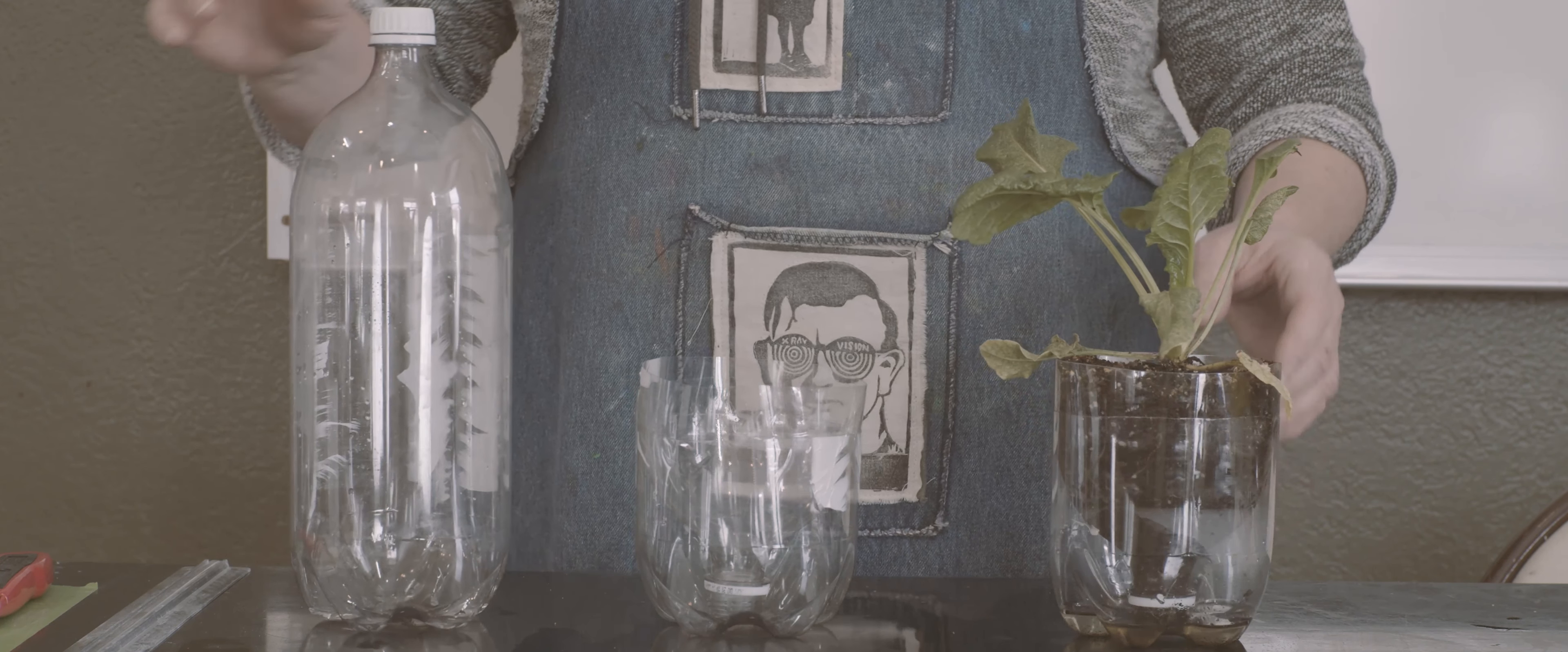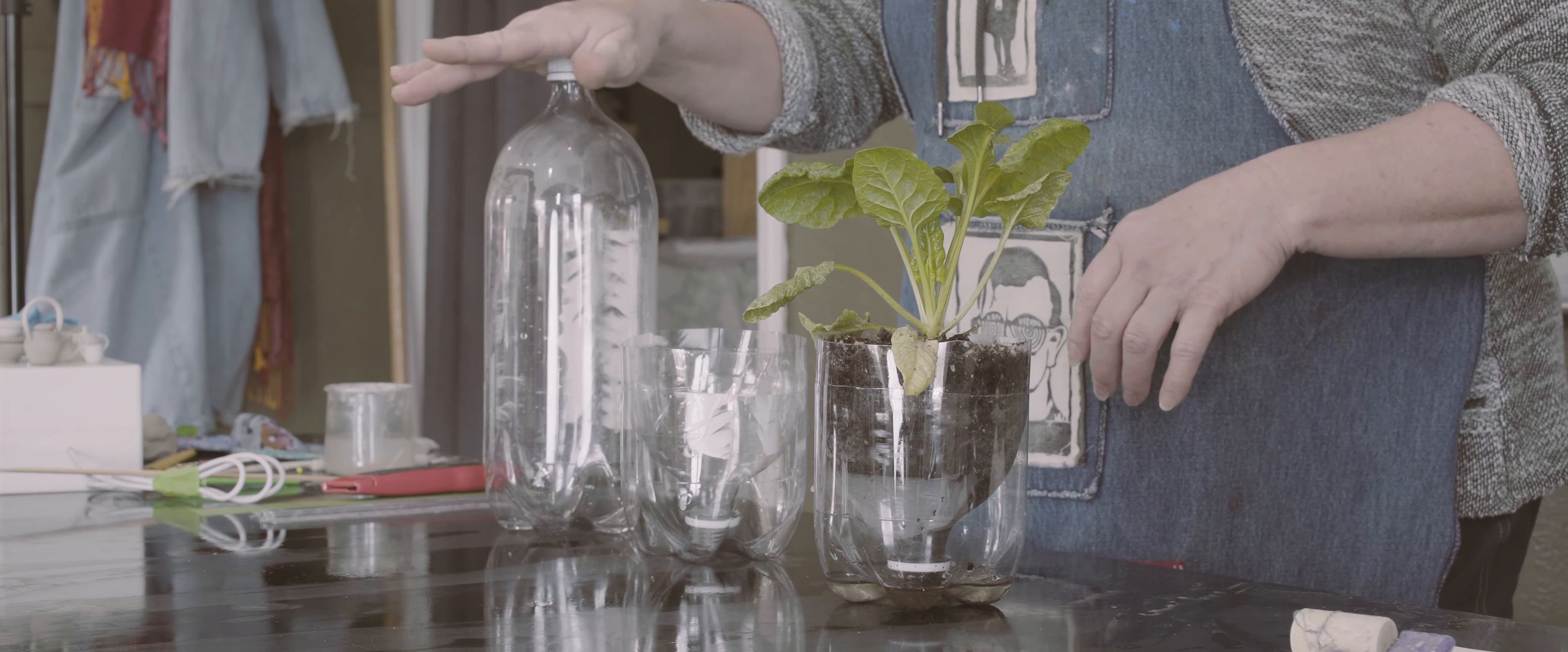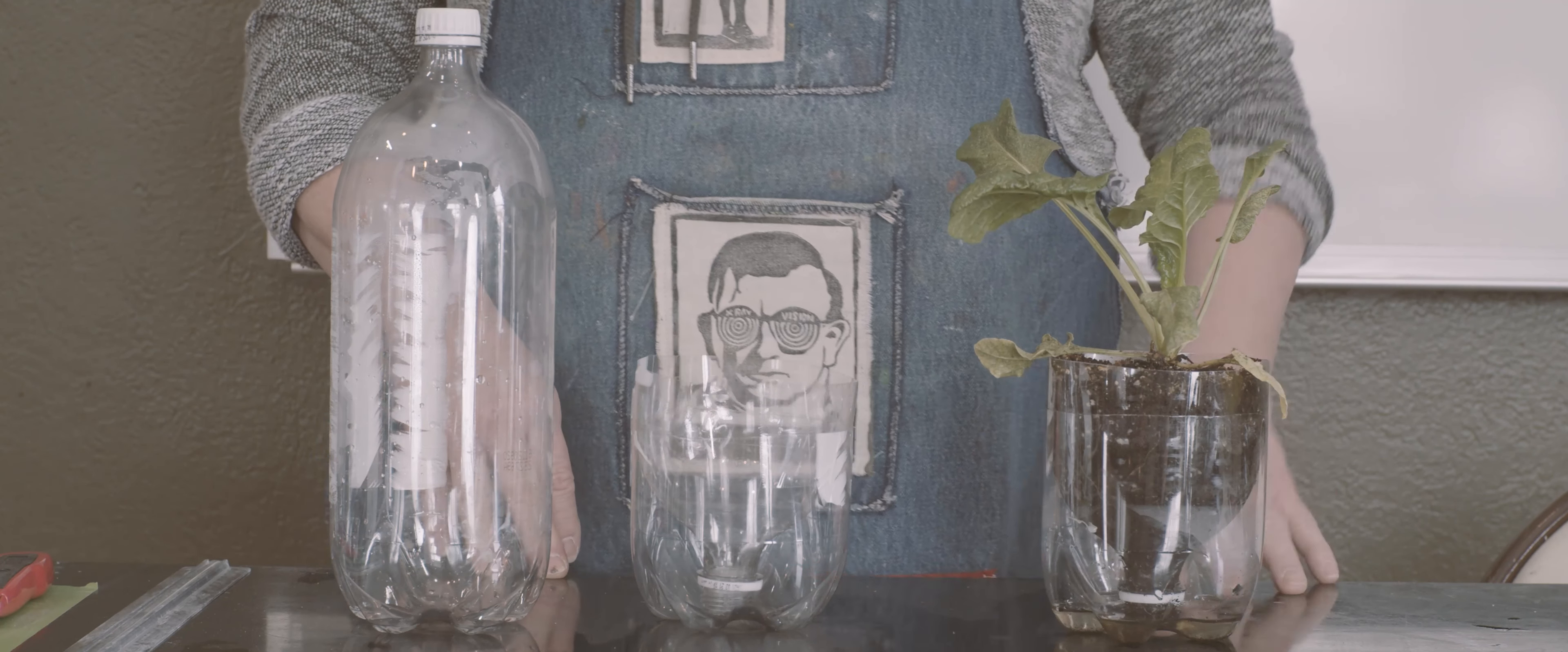One of the things I do in spring is start with seeds under lights or in a windowsill, and usually way too early, so they outgrow their little pots and start to get leggy. One of the things I figured out how to do is take my recycled seltzer bottles and two-liter bottles and turn them into a self-watering planter where plants can grow to a pretty good size and transplant nicely into the garden.